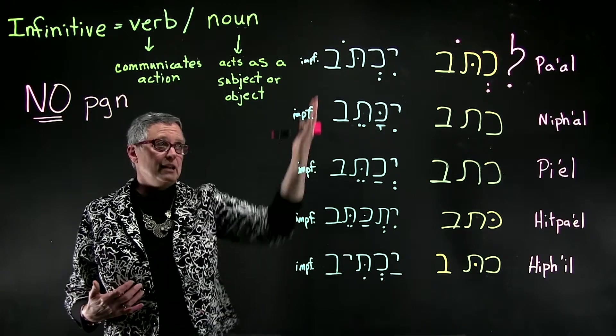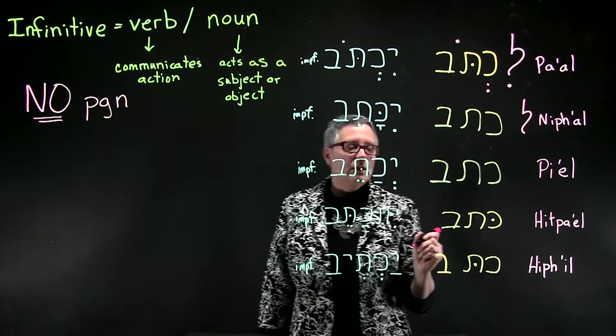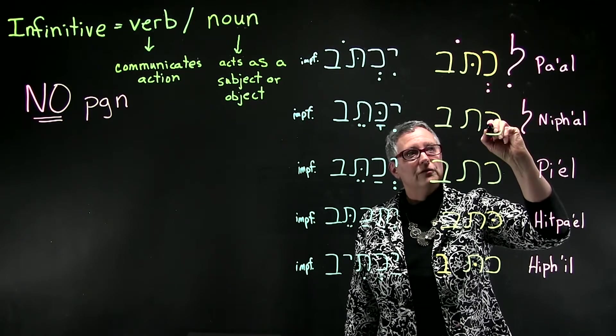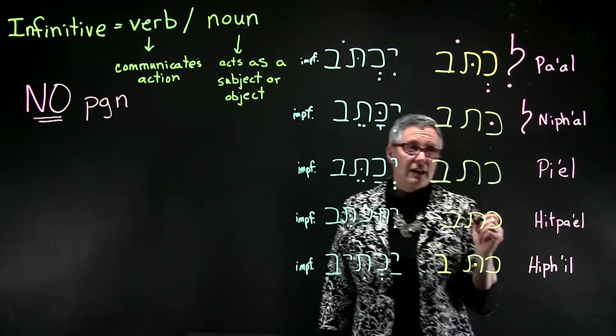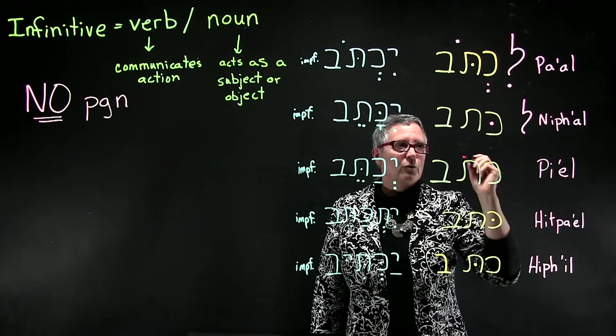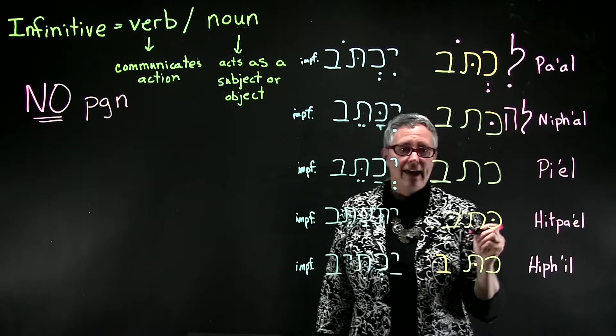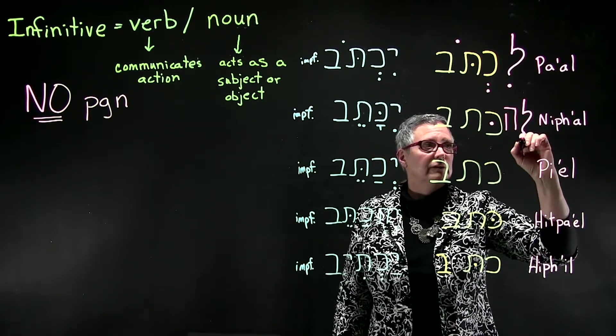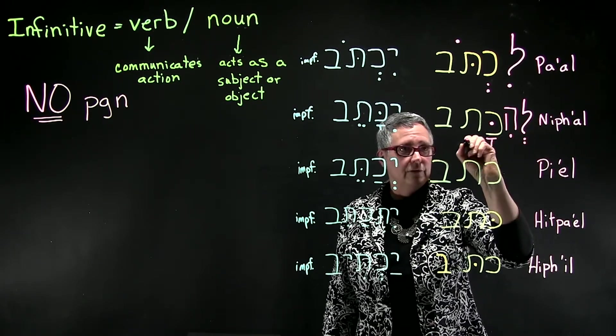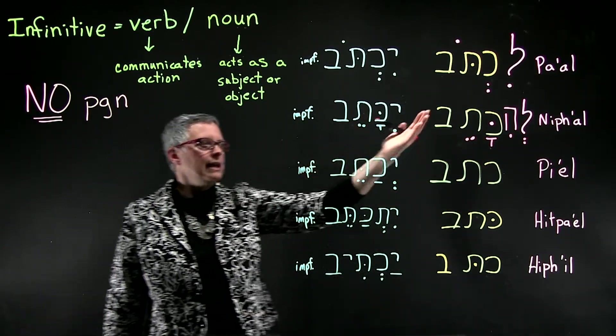So that's really convenient, and it follows through on the other stems as well. So for the niphal, as you might expect, you are going to have a dagesh in the first root letter representing a nun that has disappeared. But a really unusual thing happens with the niphal infinitive, and that is that there's a hey after the preposition. Then the vocal pattern follows along with the imperfect. So lahikatel.